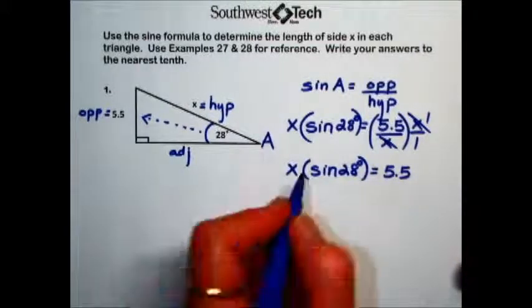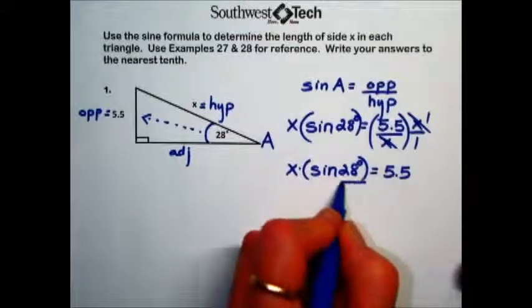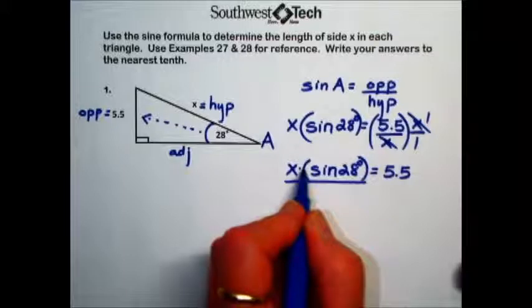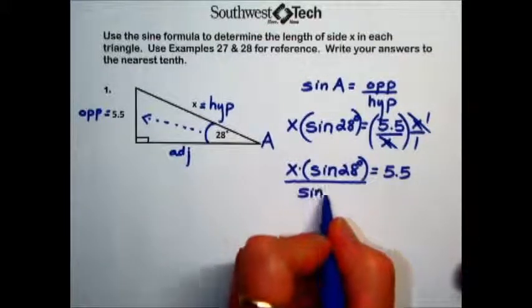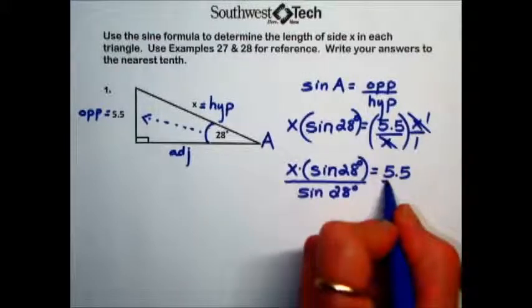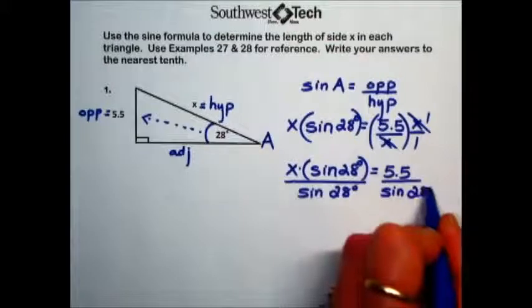Next, we want to get x by itself. The variable is being multiplied by the sine of 28. And to undo or cancel a multiplication, we will do the opposite by dividing. And to maintain equality, both sides will need to be divided by the sine of 28 degrees.